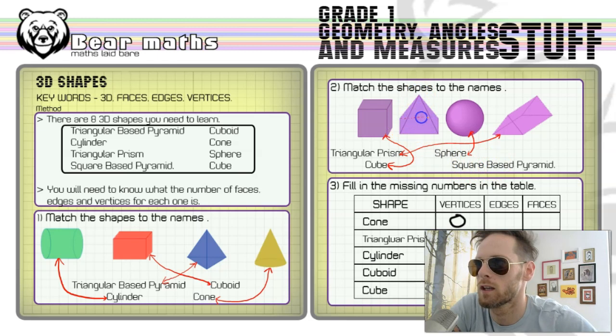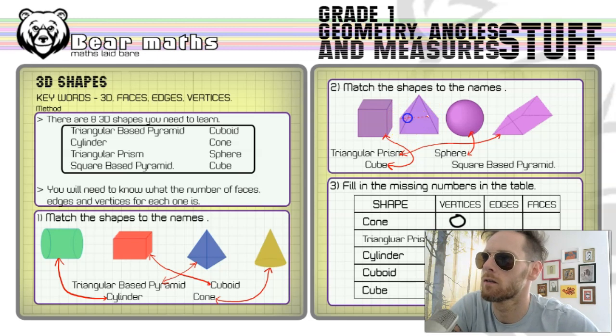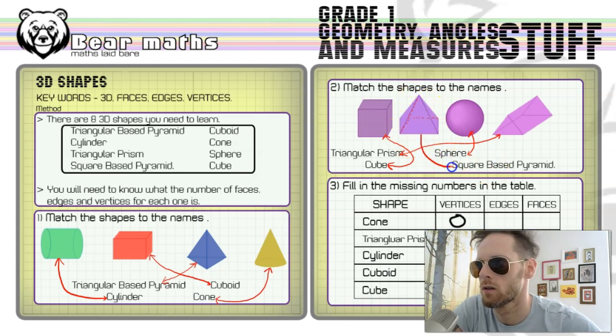A square based pyramid would be this pyramid here. If I draw a little thing in there, you'll get an understanding of how that is a square base. Actually, that sketch looks terrible, so I won't do that. Just know that's a square based pyramid with four faces and a square on the bottom—five faces in total. It was the only other one left anyway, right?